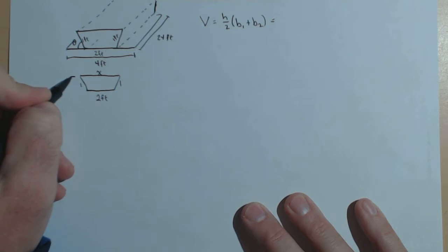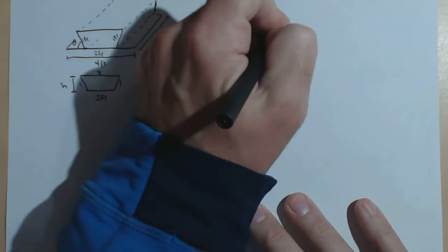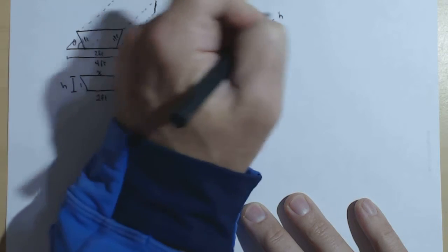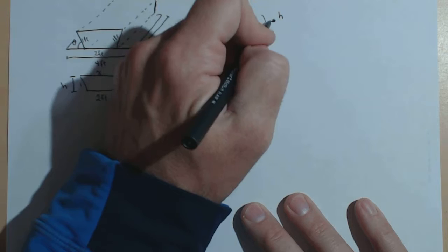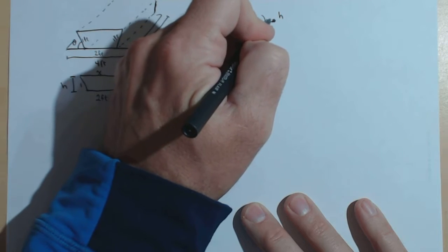And we need a height of our trapezoid, which if we want we can keep as h for right now. So we have h. We haven't finished off our volume, excuse me. Area of the trapezoid times the depth, which is constant, which is always going to be 24.